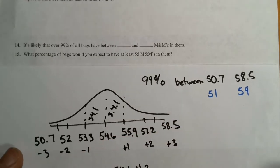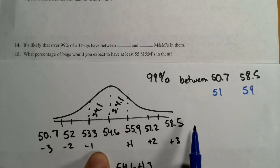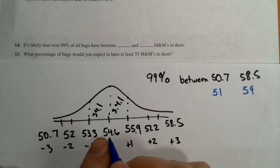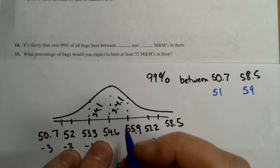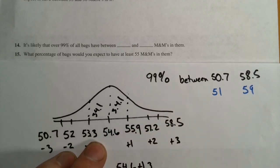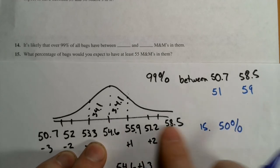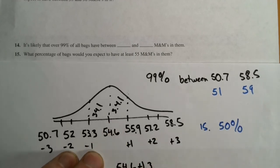So then the last one is what percentage of bags would you expect to have at least 55 M&Ms? That would be 55 or above. Again, because our mean is 54.6, we technically can't answer this, but we're going to assume he's thinking we were supposed to make that a 55. And for number 15, we would say 50%, because that's above half. So he's treating this as 55.